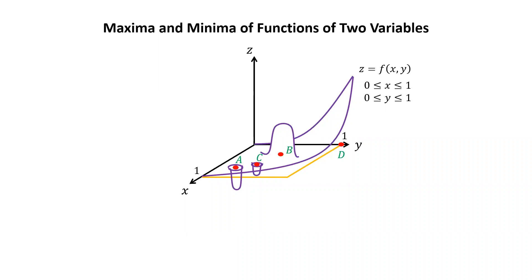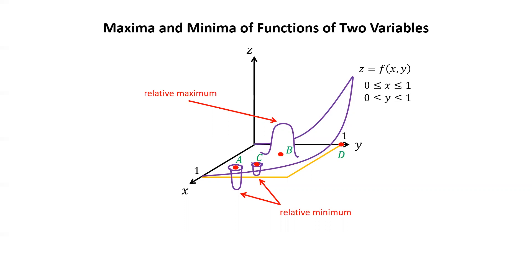I've labeled four points a, b, c, and d there. Notice that at points a and c, we have relative minima — a and c are the locations of those relative minima. The relative minima themselves are the z values. At point b, we have a relative maximum. Again, b is the location of the relative maximum; the value of the relative maximum is the corresponding z value.